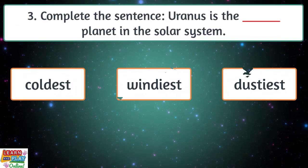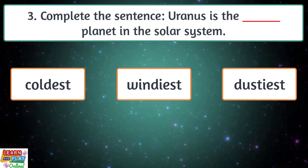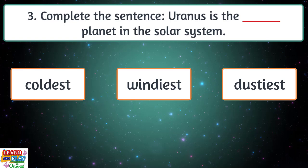Question 3. Complete the sentence. Uranus is the planet in the solar system. Is it the coldest, windiest or dustiest?